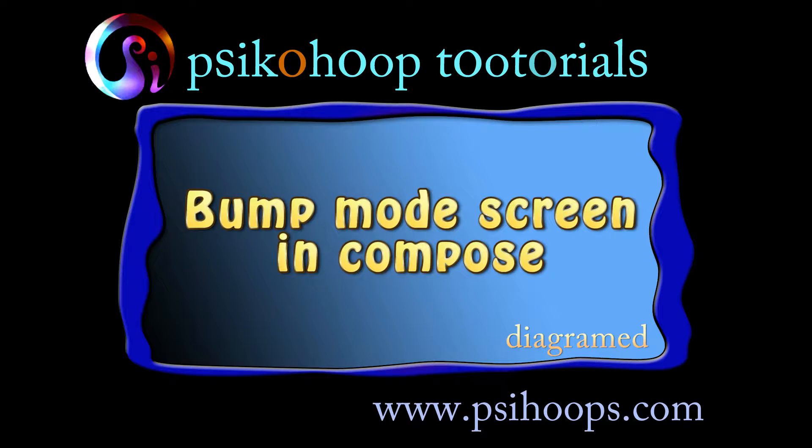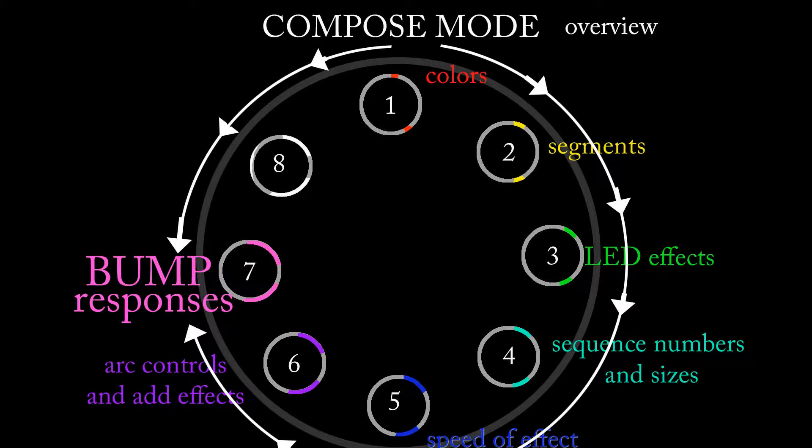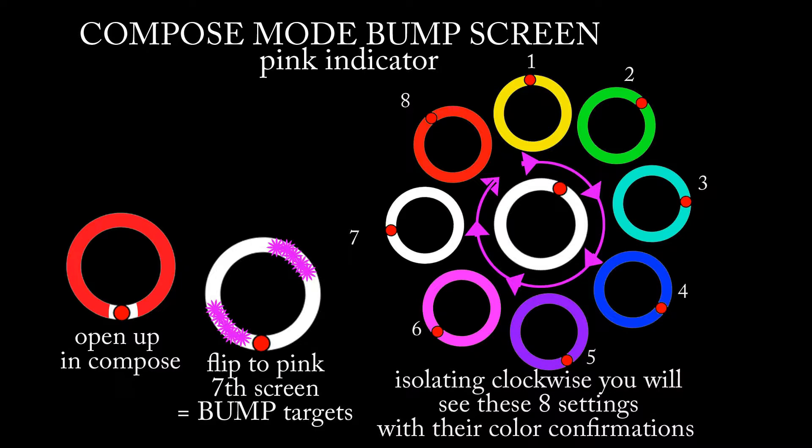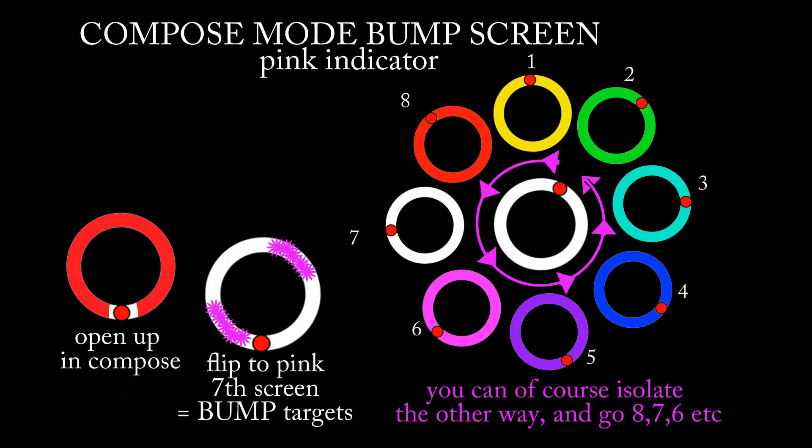The pink screen, seventh screen of Compose mode, gives you different choices for how a bump will affect the display. As you turn Merlin's wheel, you'll go through eight different colors, each one of which gives you different settings.